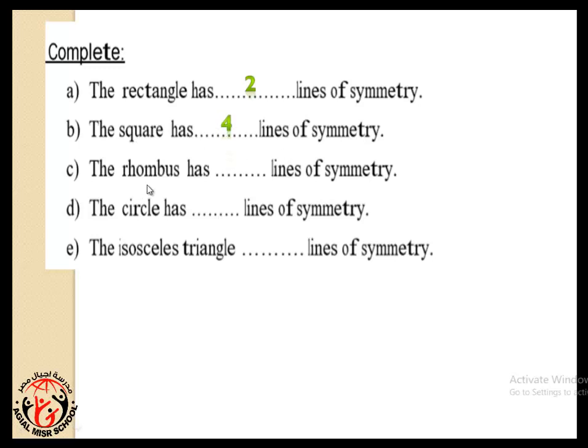The rhombus has how many lines of symmetry? Very good, two lines. The circle has how many lines of symmetry? Yeah, infinite number. The isosceles triangle has how many lines of symmetry? Yeah, one. Excellent.